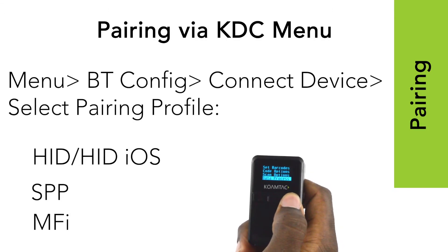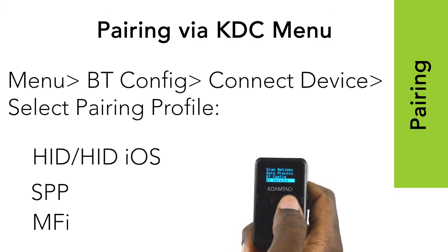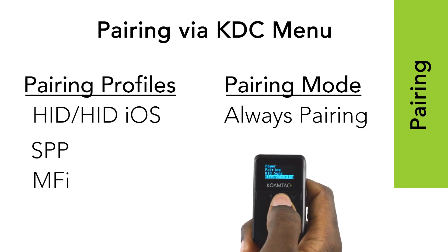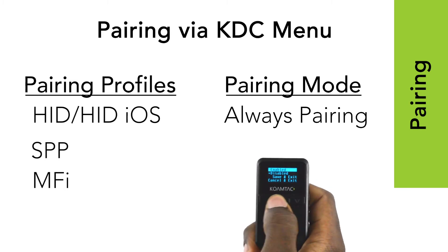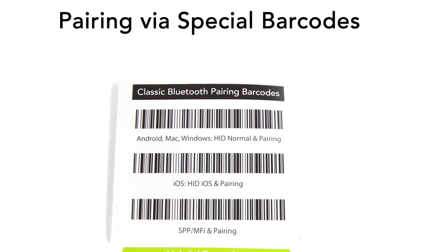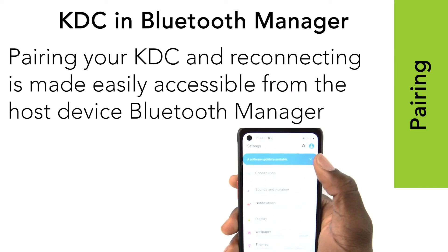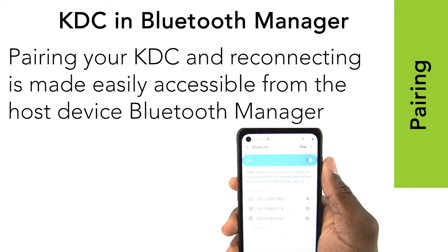Pairing. You can pair manually from the KDC menu by going down to BT Config, Connect Device, and then select your preferred pairing profile like HID, SPP, MFI, and Always Pairing. You can also use the quick guide that comes with your KDC to pair — scan the special barcode of the pairing profile you want, and it will automatically put your scanner into pairing mode. You will be able to find the status of your KDC in the Bluetooth Manager on your host device, where you can either connect or reconnect to your KDC scanner.